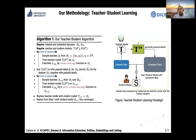We call these pseudo-labels, and we combine the original labeled data and the pseudo-labels together into one dataset. Then we train the student model on it. We repeat this process for a number of iterations, using the student model as the new teacher for the next iteration.